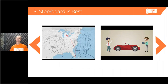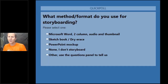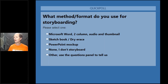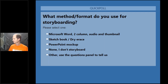Storyboarding is pretty important. Some people storyboard, others don't — some just jump right into video. We're going to do a poll: what type of storyboarding do you do? Options include Microsoft Word two-column audio and thumbnail layout, sketchbook or dry erase, PowerPoint mock-ups, or none. Other ideas coming through include Google Docs, Visio, sketchbook, PowerPoint, OneNote for collaborating, and Google Slides for collaborating.